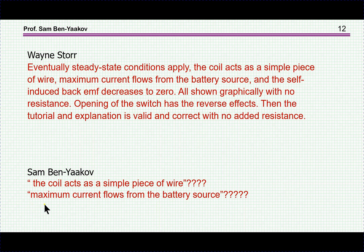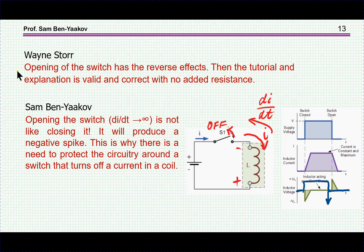And then it says that maximum current flows from the battery source. What is maximum current, or what does it mean? This is garbage. And then it says opening the switch has the reverse effect. Well, then the tutorial and explanation is valid and correct with no added resistance.